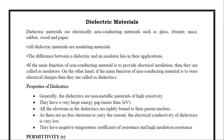Properties of dielectrics: Generally, dielectrics are non-metallic materials of high resistivity. They have a very large energy gap — that is, the difference between the conduction band and valence band in the energy band diagram. This energy gap is more than three electron volts. All materials which have an energy gap above three electron volts may be dielectric materials.